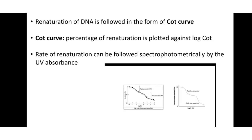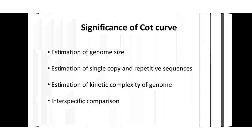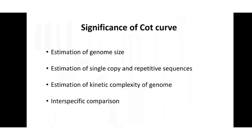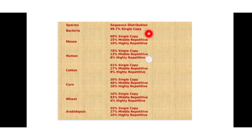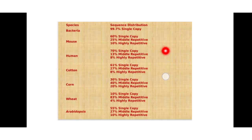The significance of the Cot curve includes: estimation of genome size; estimation of the proportion of single-copy sequences and repetitive sequences present in the DNA; and estimation of the kinetic complexity of the genome. Interspecific comparison of Cot data has provided considerable insight into the evolution of eukaryotic genomes. For example, in bacteria, 99.7% is single-copy sequence. In mouse, 60% is non-repetitive, 25% is moderately repetitive, and 10% is highly repetitive. In humans, 70% is non-repetitive, 13% is moderately repetitive, and 8% is highly repetitive.